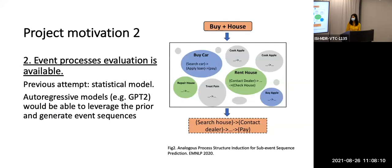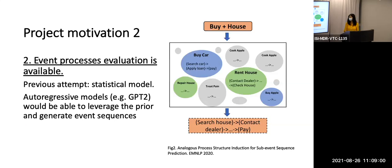Moreover, this kind of event process evaluation is available to us right now. Here is previous work that also does event generation. If we can take in an event process comprised of a predicate and arguments such as 'buy a house,' by leveraging other similar processes such as 'buy a car,' 'rent a house,' or 'repair a house,' we can infer what's the most likely sequence to accomplish this task. Since we have this dataset and task, we want to see if we can also use current language models to accomplish the same level of event process generation. In that case, we can not only leverage the observed events but also use the prior already in pre-trained models to help us better infer knowledge.